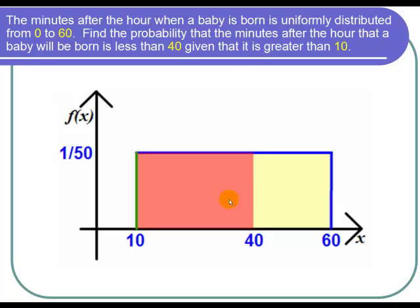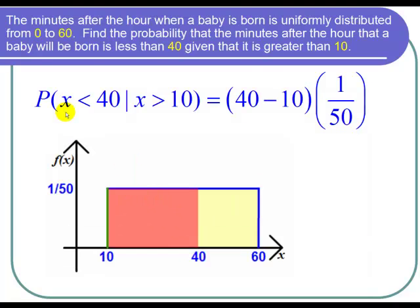Now the area of a rectangle is the base times the height. So we can say the probability that x is less than 40 given that x is greater than 10 is equal to the base and the base length is 40 minus 10 that length is 30 times the height and the height of the rectangle is 1 over 50.